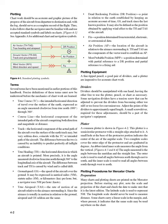Dead reckoning position (DR position): a point in relation to the Earth established by keeping an accurate account of time, GS, and track since the last known position. It may also be defined as the position obtained by applying wind effect to the TH and TAS of the aircraft. Fix: a position determined from terrestrial, electronic, or astronomical data.